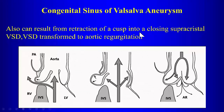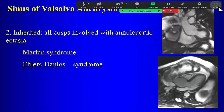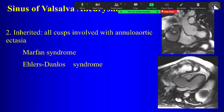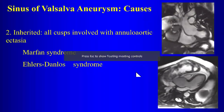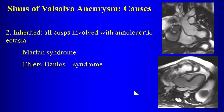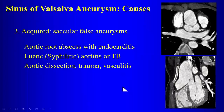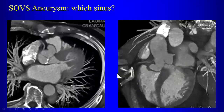Congenital sinus of Valsalva aneurysms can be associated with ventricular septal defects: prolapse of the sinus down into the defect causes enlargement. With Marfan's and Ehlers-Danlos, all sinuses tend to be involved, producing the tulip bulb sign. Acquired causes include infection, aortic root abscesses, syphilitic aortitis, TB, and also complications from dissection, trauma, or vasculitis.